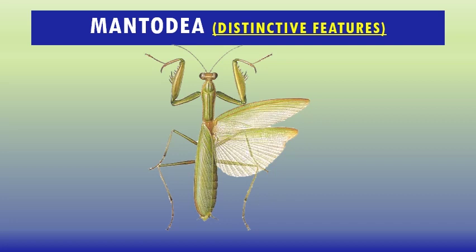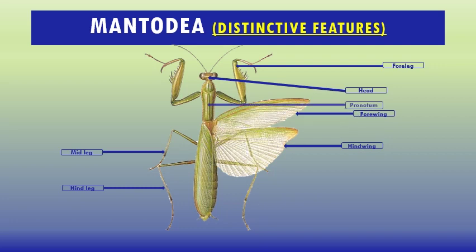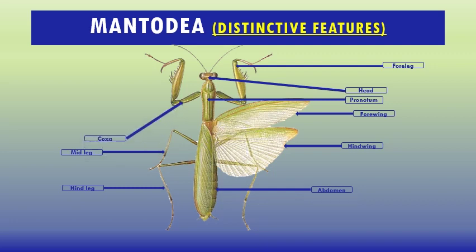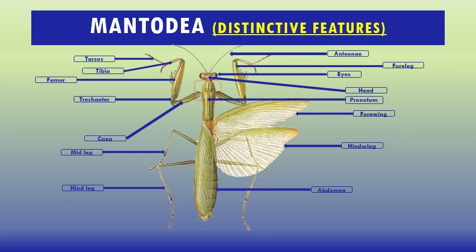Some common features include the forelegs, mid legs, hind legs, forewings, and hind wings, along with the head, pronotum, and abdomen. The specialized foreleg features include the coxa, trochanter, femur, tibia, and tarsus. Also visible are the eyes and antennae.